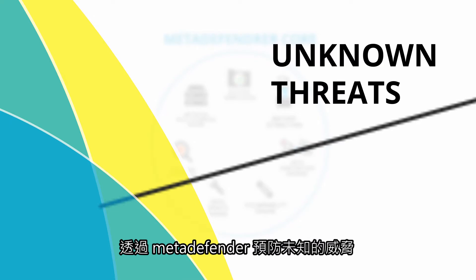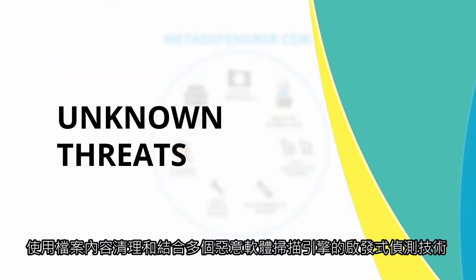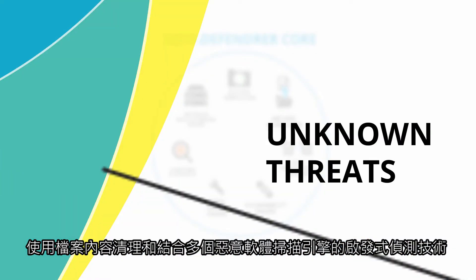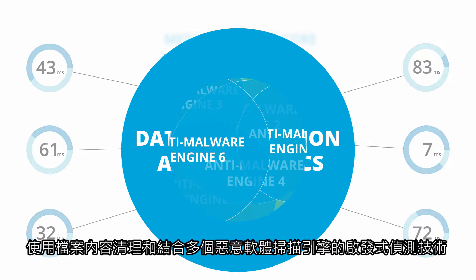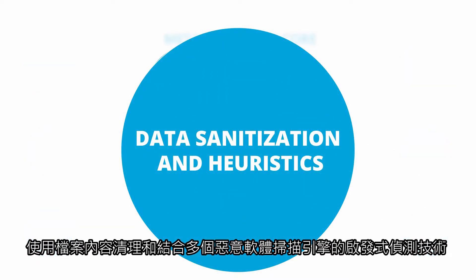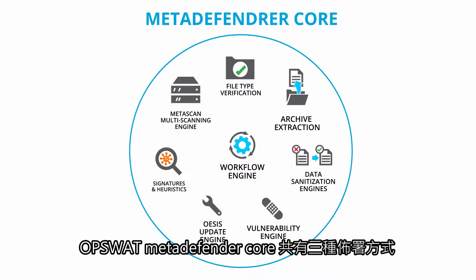Unknown threats are prevented by MetaDefender using data sanitization and the combined heuristics of many anti-malware engines to remove possible embedded threats and detect potentially harmful code. OpSwap MetaDefender Core is available in three versions.